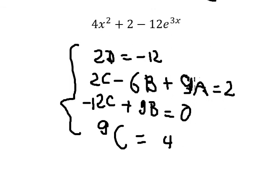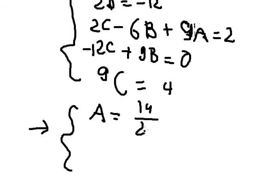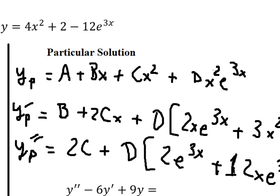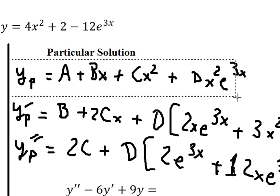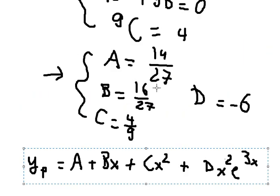Solving the system: C = 4/9, then from −12C + 9B = 0 we get B = 16/27, then A = 14/27, and D = −6. We now substitute these values of A, B, C, D back into yp.